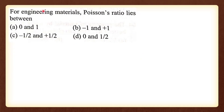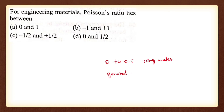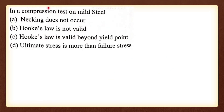For engineering materials, Poisson's ratio lies between 0 to 0.5. In general, the mu value range is negative to 2.5, but for engineering materials specifically, it is 0 to 0.5. Option D is the correct answer.